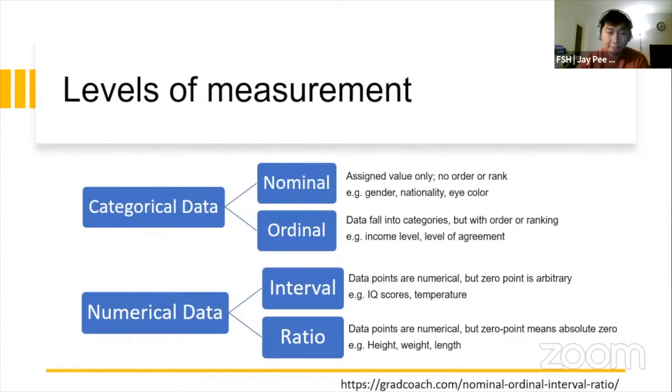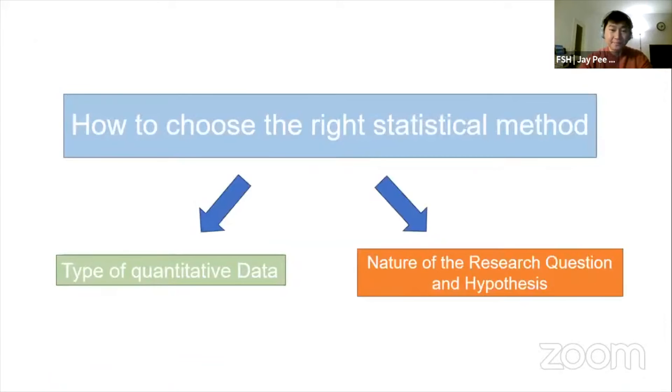So, this is very important because it's a jargon for statistics. When we say nominal, ordinal, interval, ratio, we should immediately understand what those types are. Because these are very technical terms. When we say number, it's not just any number. There is an interval type or ratio type of number.